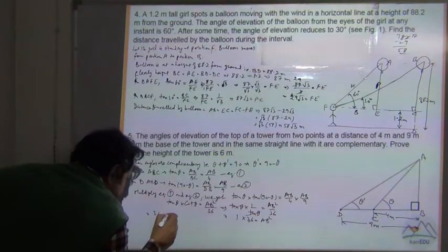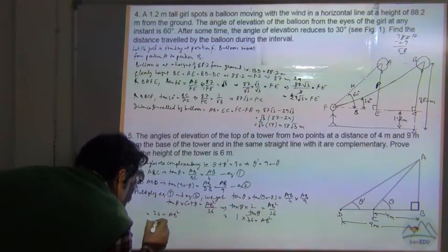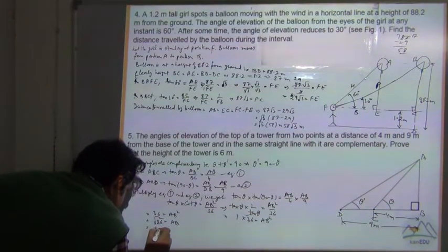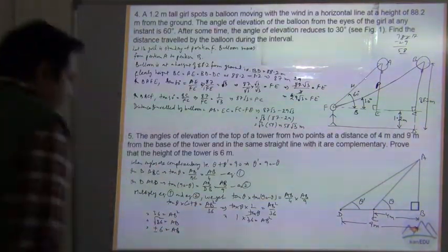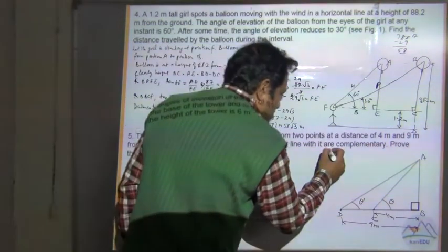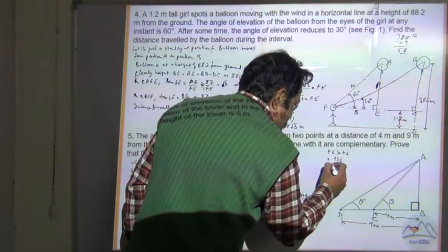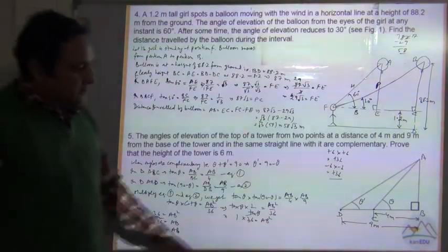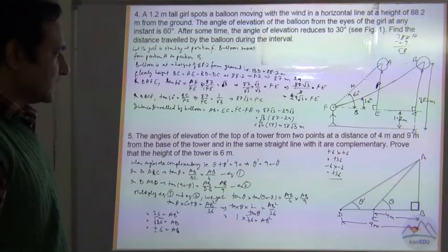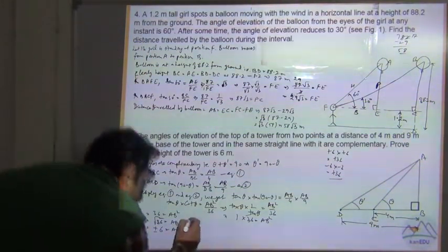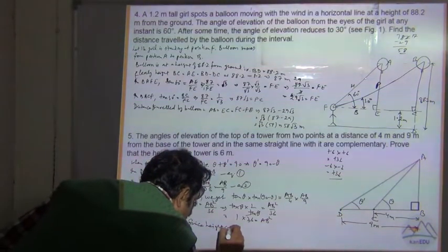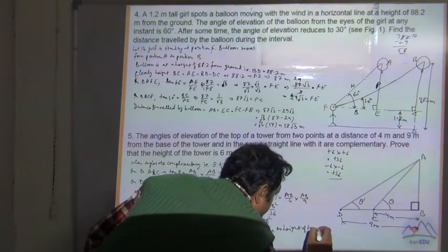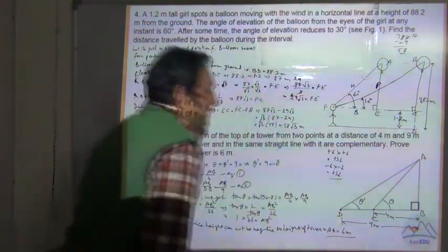Since tan(90 minus theta) equals cot theta, and tan theta multiplied by cot theta equals 1, taking 36 to the left-hand side gives AB² = 36. So AB = √36 = ±6. Since height cannot be negative, the height of the tower AB = 6 meters.